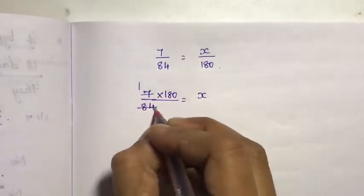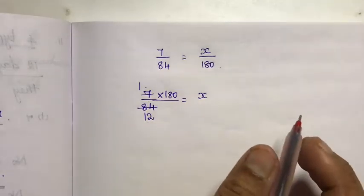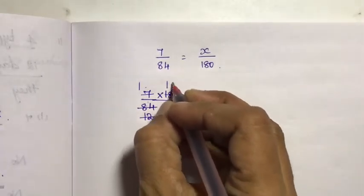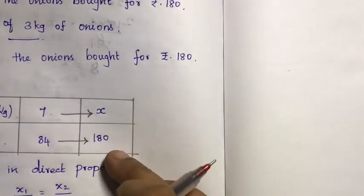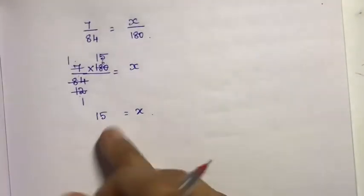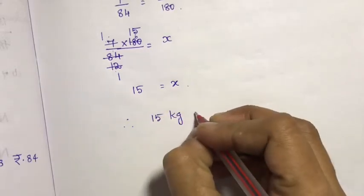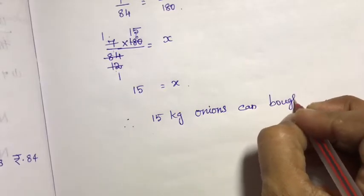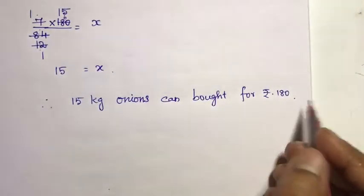Solving: 7 by 84 equals x by 180. Cross-multiplying and simplifying — 12 into 7 is 84; cancelling gives 15. So x is equal to 15. Therefore, the weight of onions bought for 180 rupees is 15kg. Answer: 15kg of onions can be bought for 180 rupees.